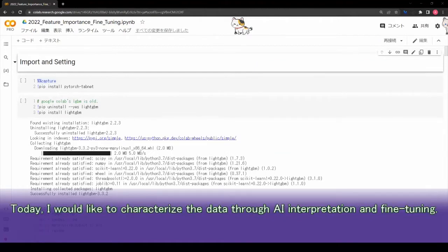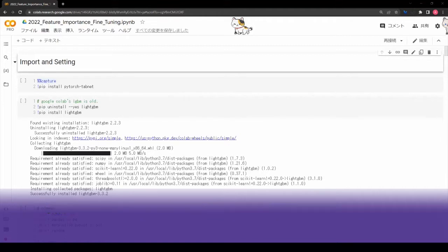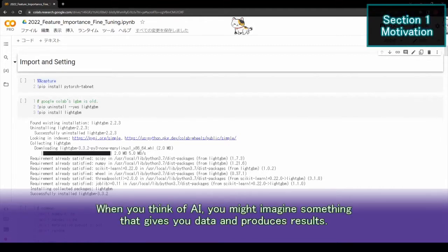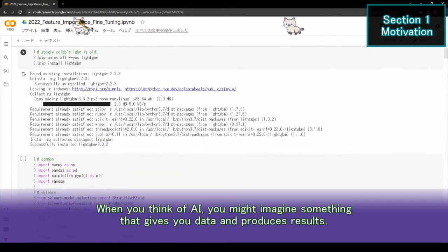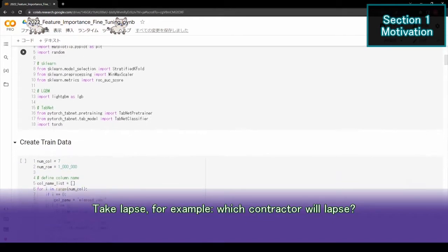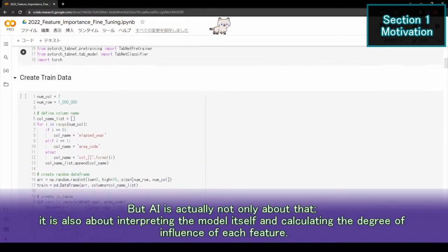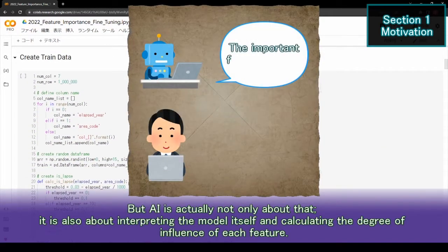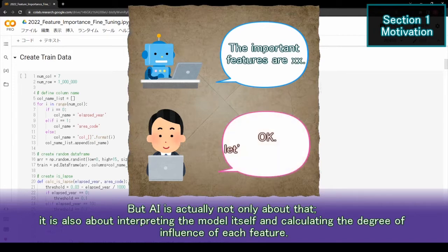Today, I would like to characterize the data through model interpretation and fine-tuning. When you think of AI, you might imagine something that gives you data and produces results, like predicting which contractor will lapse. But AI is actually not only about that, it is also about interpreting the model itself and calculating the degree of influence of each feature.